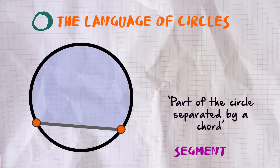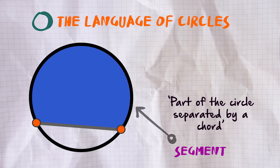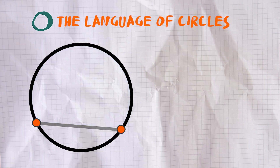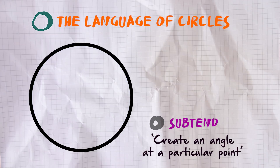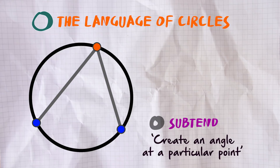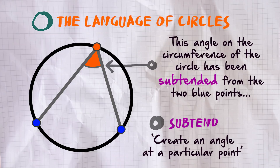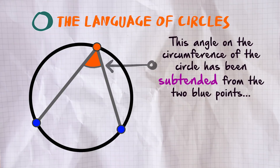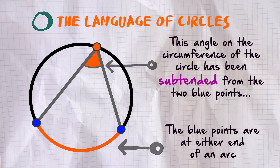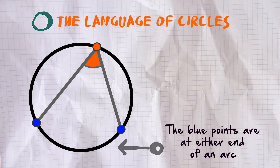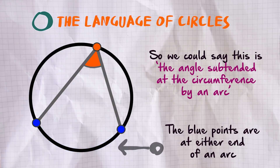The chord creates two segments — you can see them highlighted in blue there. 'Subtend' is a word we use quite a lot in circle theorems and it just means to create an angle at a particular point. You can see that angle on the circumference there highlighted in orange has been subtended from those two blue points. Those two blue points are either end of an arc, so we could say it is the angle subtended at the circumference by an arc.